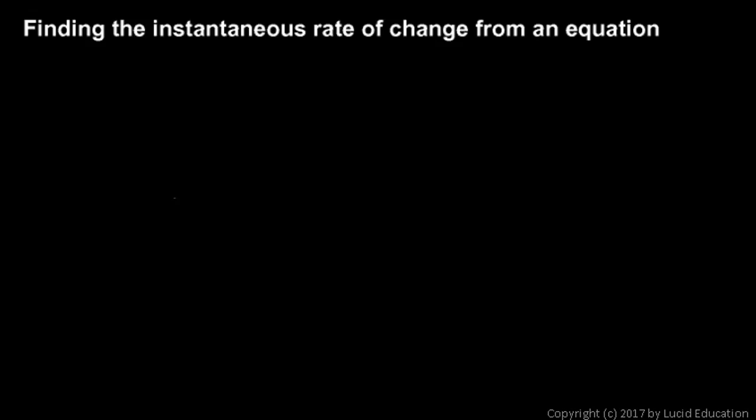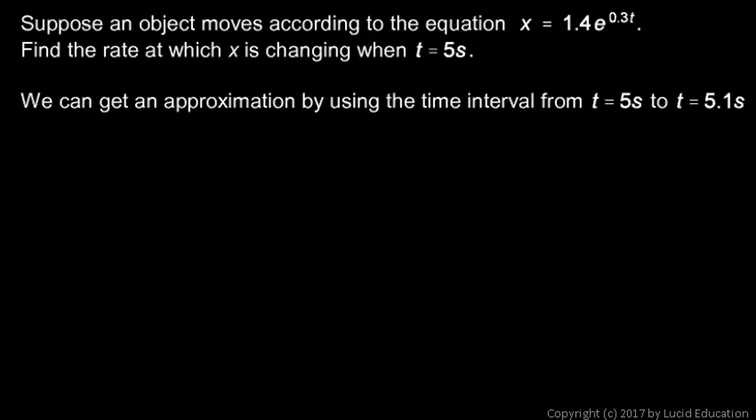We can also find a rate of change from an equation. Sometimes we're not given a graph or picture where we can physically draw a sketch of a tangent line, but we're given an equation, a mathematical relationship. In this case we're told suppose an object moves according to the equation x equals 1.4e to the 0.3t, and we're given that equation instead of the graph.